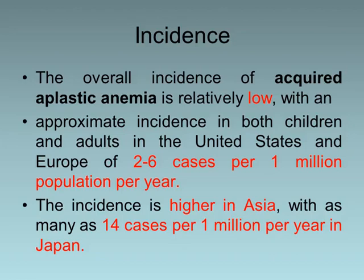The overall incidence of acquired aplastic anemia is relatively low, with an approximate incidence in both children and adults in the United States and Europe of 2 to 6 cases per 1 million population per year. In Asia the incidence is higher, with as many as 14 cases per million per year reported in Japan.